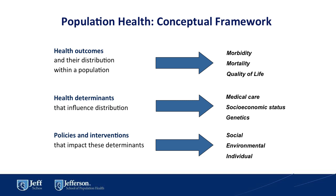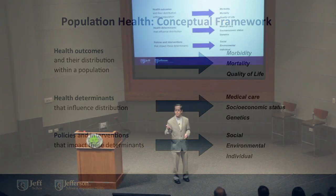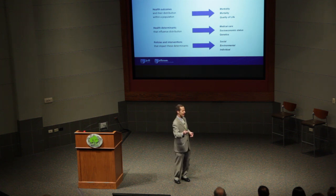Basically, population health says the following: that there are health outcomes and they're distributed within a population. Some of the measures of those outcomes could be morbidity, mortality, or the one I gave you this morning — number 17 in the world after Slovenia with regard to quality of life. That's part one.